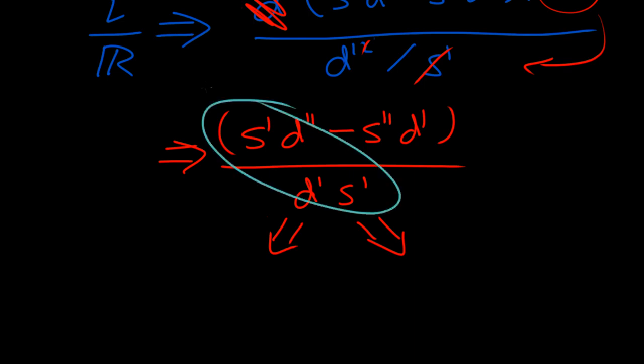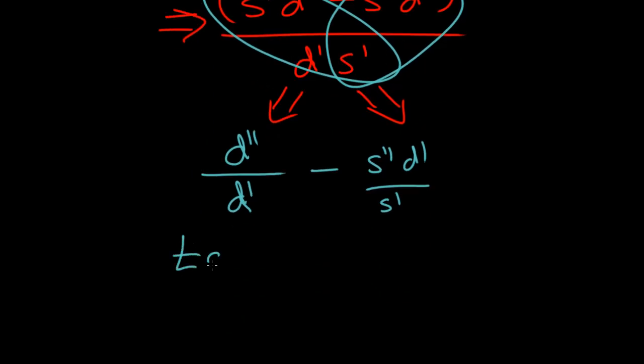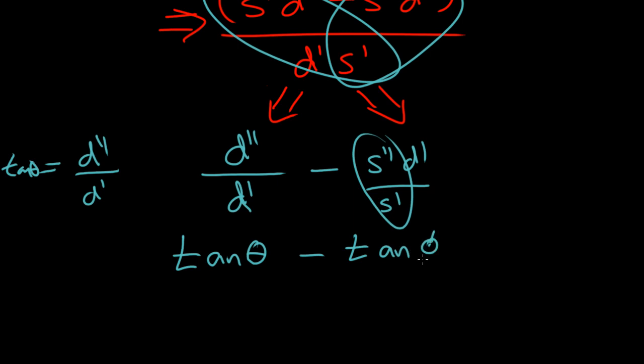We have on this side, we have D double prime divided by D prime, minus, we have this side right here, S double prime D prime divided by S prime. So we mentioned this is going to be the tangent phi, remember because D double prime over D prime is tangent phi. This right here, that's tangent delta, or tangent phi, this is tangent theta, and this is D prime. So actually you see how the interaction works out between the lost energy and the stored energy.